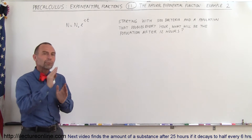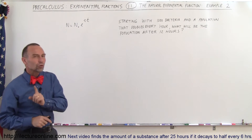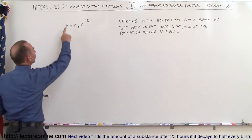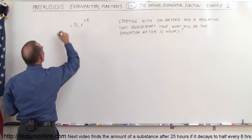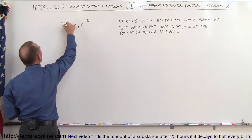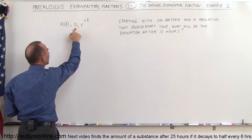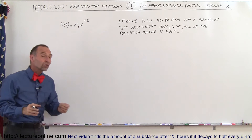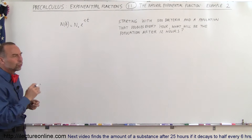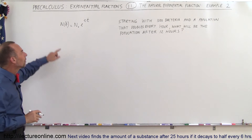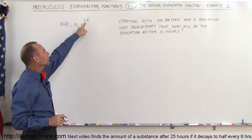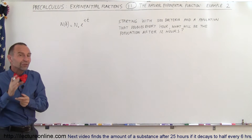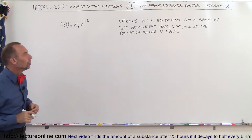We've done something like this before in a previous video, but here we're going to use the natural exponential function. The function looks like this: the number of bacteria as a function of time is equal to the initial population times e to the rate of growth times time. The question is: what is the rate of growth?